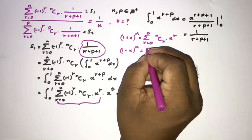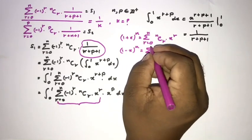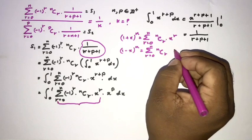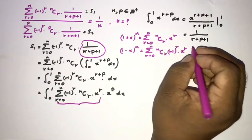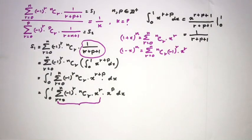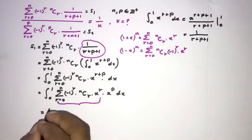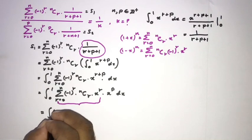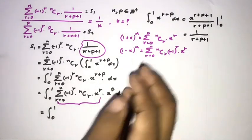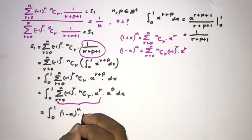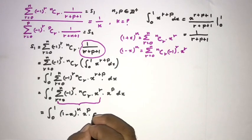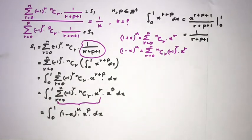Substituting minus x, we get 1 minus x to the n equals the sum from 0 to n of minus 1 to the r times n choose r times x to the r. Therefore S1 simplifies to the integral from 0 to 1 of 1 minus x to the n times x to the p dx.